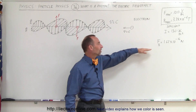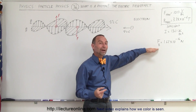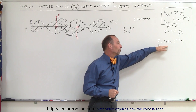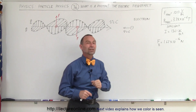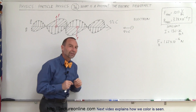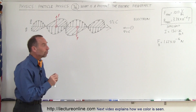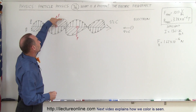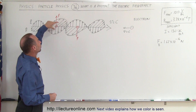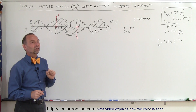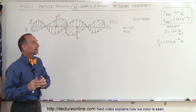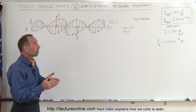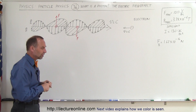In the last video, the force caused by the magnetic field oscillations was 1.62 × 10⁻¹⁶ Newtons on the electron — that's the maximum force at the maximum amplitude of the magnetic field oscillation. Now let's find out what the maximum force is on the electron caused by the electric field.